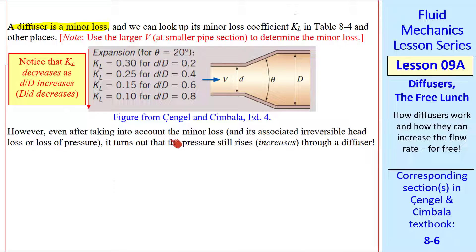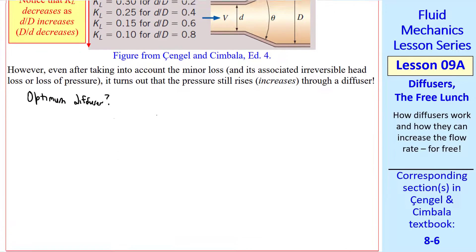But even after taking into account the minor loss, and its associated irreversible loss of pressure, it turns out that the pressure still rises through the diffuser.